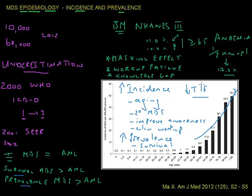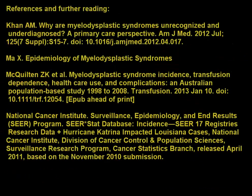So that is an overview of the incidence and prevalence issues in myelodysplastic syndromes and some of the factors that influence the figures we see in the epidemiological data.